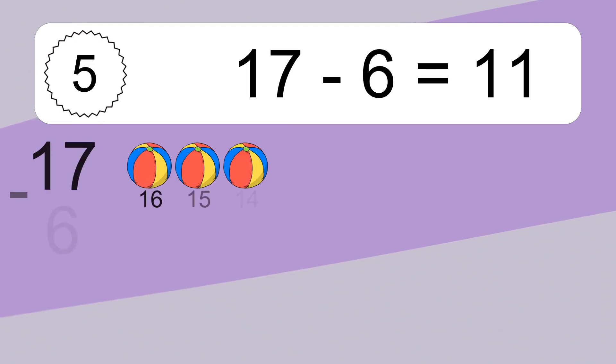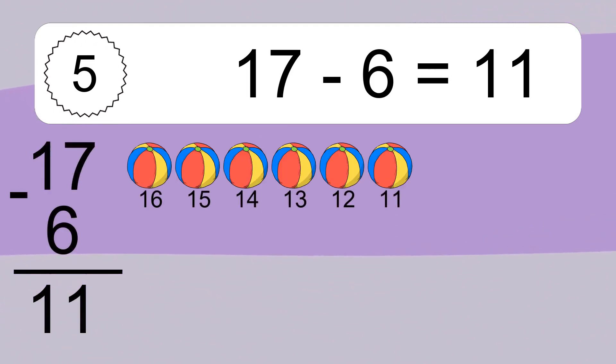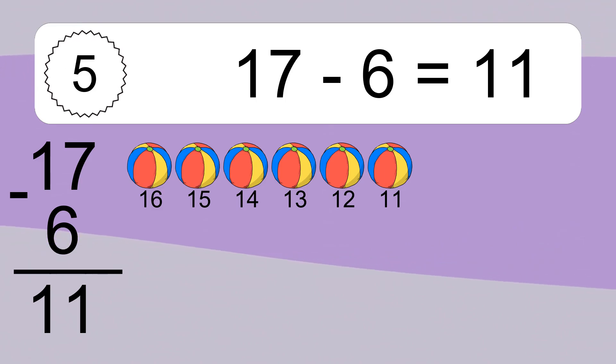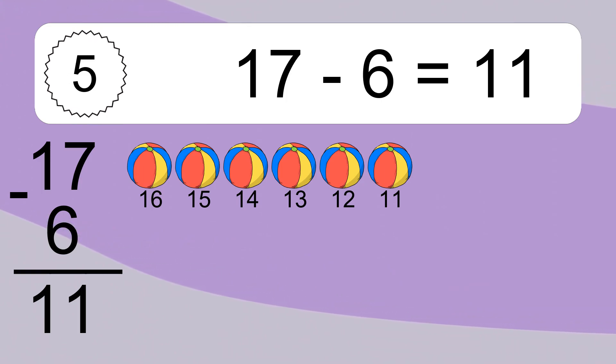17 minus 6 equals what? 17 minus 6 equals 11. Let's count it. 16, 15, 14, 13, 12, 11.